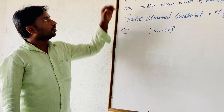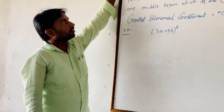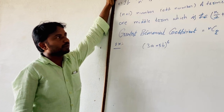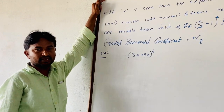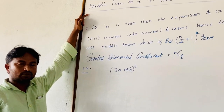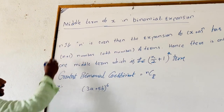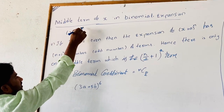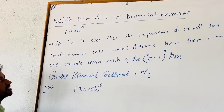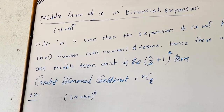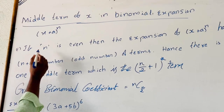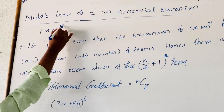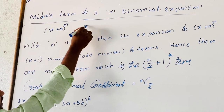Good morning students. Today we will discuss the topic of the middle term of x in the binomial (x + a)^n. You know that we already explained (x + a)^n. Now here we are forming two conditions: n is even and n is odd.